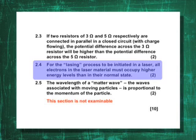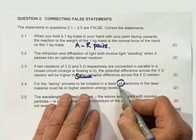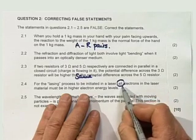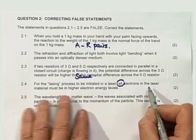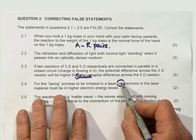For the lasering process to be initiated in a laser, all electrons in the laser material must be in higher electron energy levels. Now you might say that sounds pretty good, except if you read it carefully and you see this word 'all', it is not the case that every single electron in the material must be at a higher energy level.